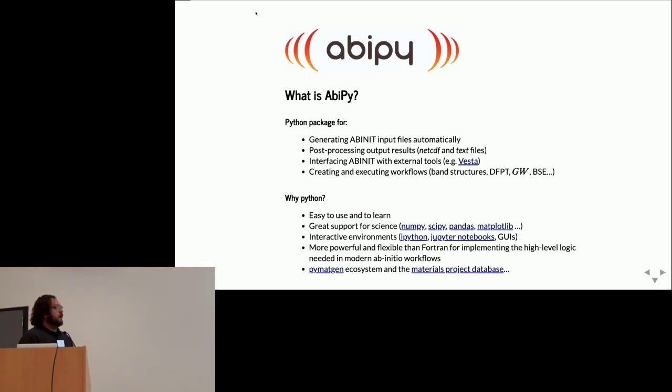When it comes to high-throughput applications, Python allows us to implement the more complicated logic we need for modern ab initio workflows. There are several packages for ab initio studies developed in Python, including the PyMagen project. Indeed, AbiPy relies on PyMagen. We use the code-independent, code-agnostic objects and low-level machinery implemented in PyMagen, then we specialize the Python implementation in AbiPy to deal with ABINIT output files and input files.